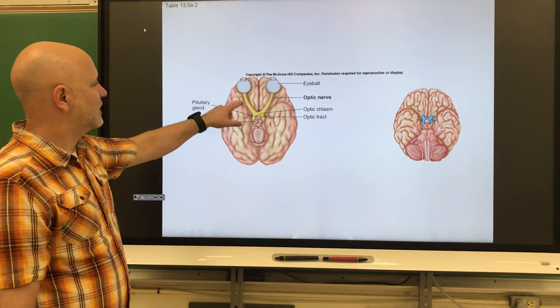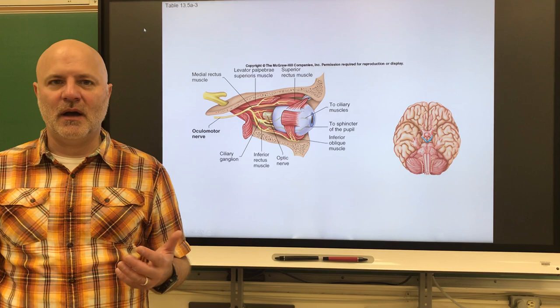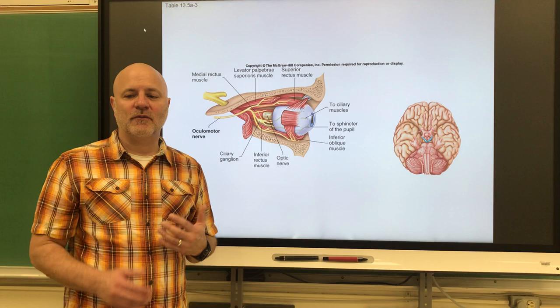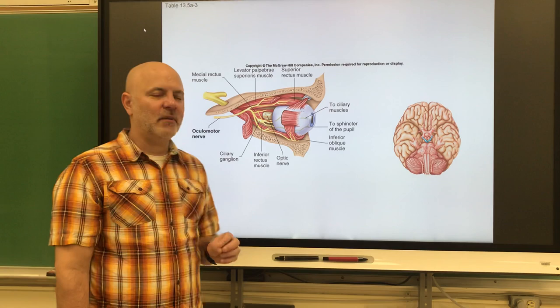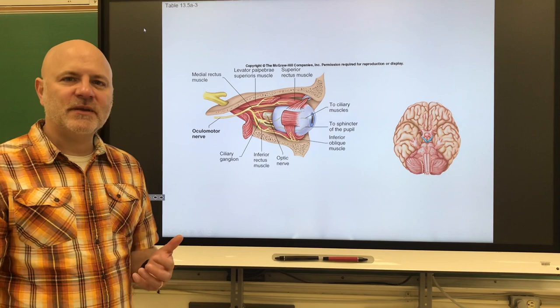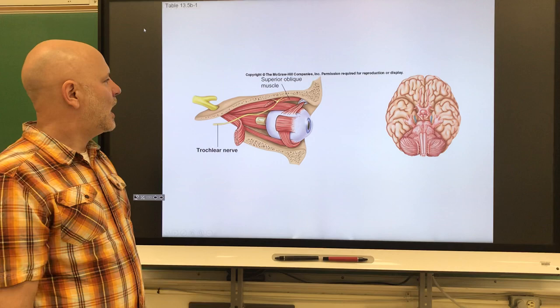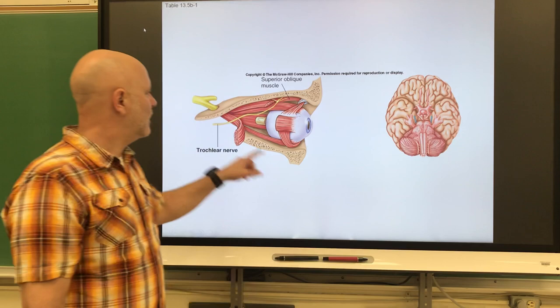Next are the optic nerves, which are sensory for vision. Following that is the oculomotor nerve, which is a motor nerve. It raises the eyelids, helps move the eyes — there are six muscles that move the eyes — it also adjusts the amount of light entering the eyes and focuses the lenses.